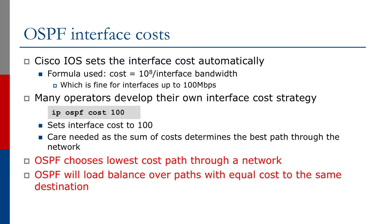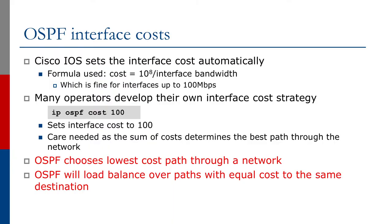Cisco IOS sets the interface cost automatically. Unlike other interior protocols, the cost is calculated based on interface bandwidth. The formula IOS uses is 100 million divided by the interface bandwidth in bits per second. This was fine for interfaces up to 100 megabits per second, which was appropriate when OSPF was developed in the early 90s — the fastest interface then was FDDI at 100 Mbps. But with 100 gigabit and 400 gigabit Ethernet today, this automatic cost generation no longer makes sense. Many operators now develop their own interface cost strategy, as they do for protocols like IS-IS.